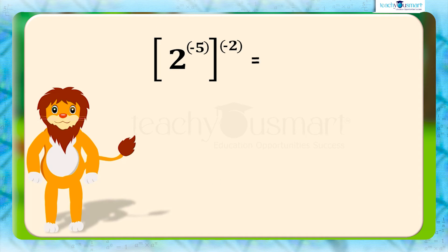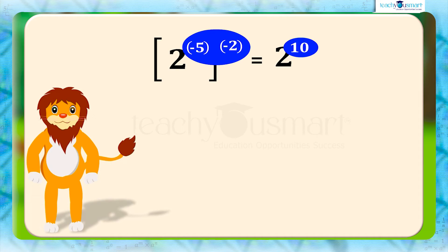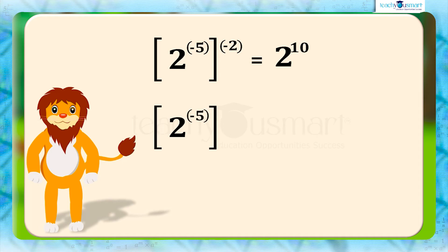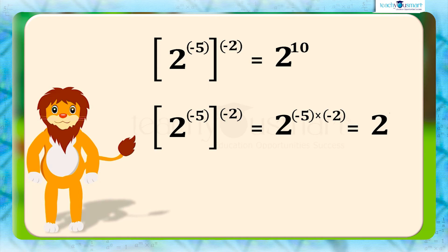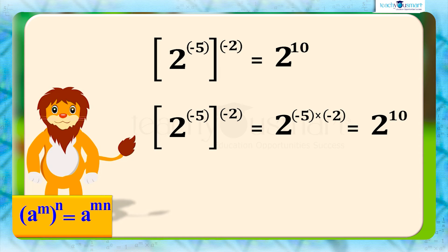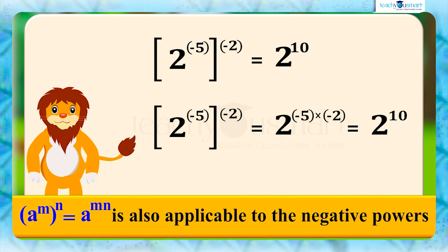Here also we can see that the product of powers minus 5 and minus 2 is 10. So we can write it as 2 raised to minus 5, whole raised to minus 2, equals 2 raised to minus 5 multiplied by minus 2, equals 2 raised to 10. That is, a raised to m, whole raised to n, equals a raised to mn, is also applicable to negative powers.